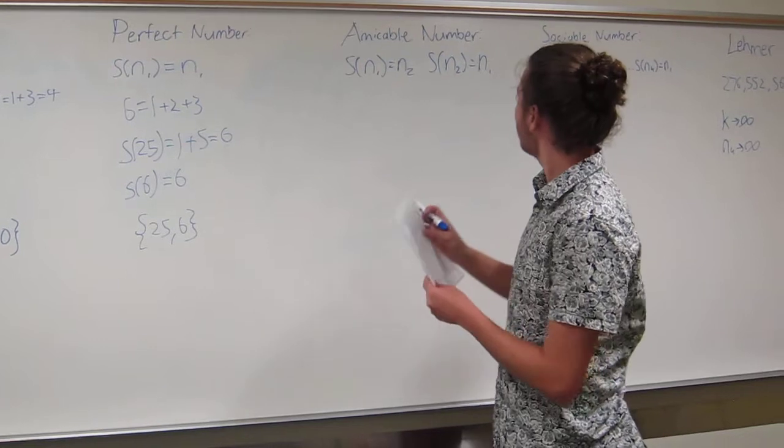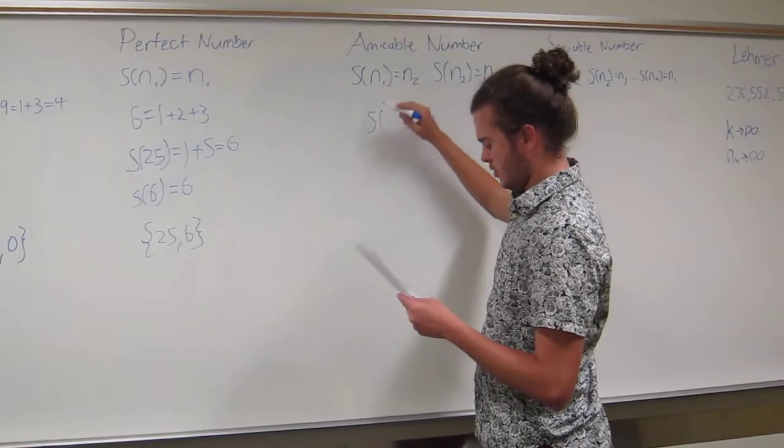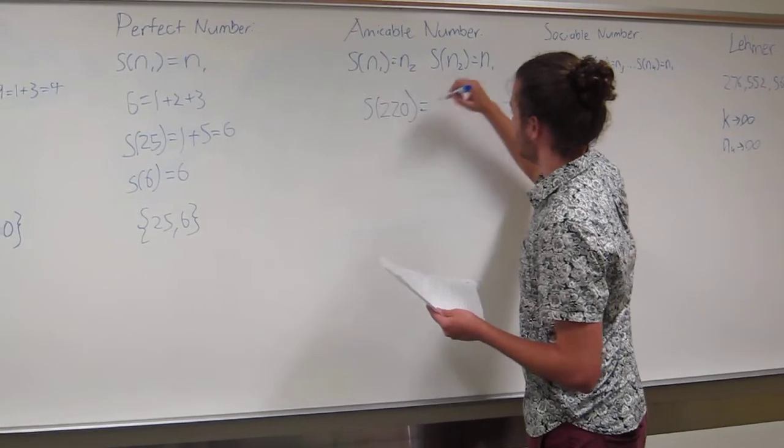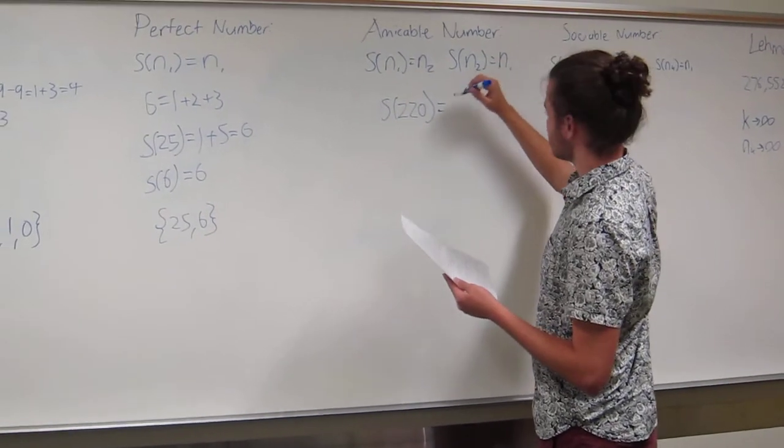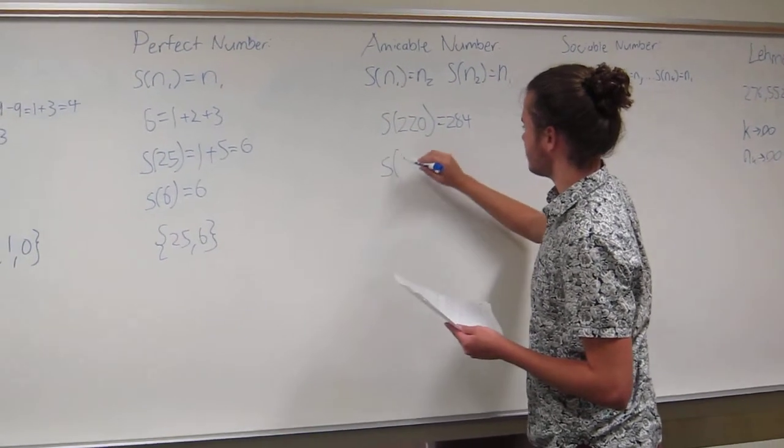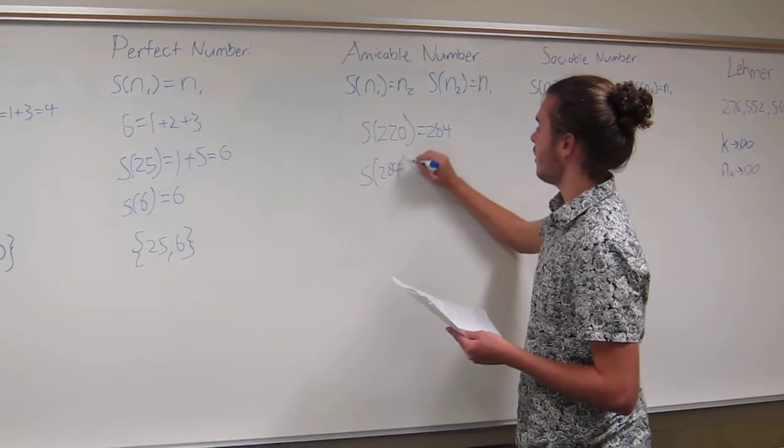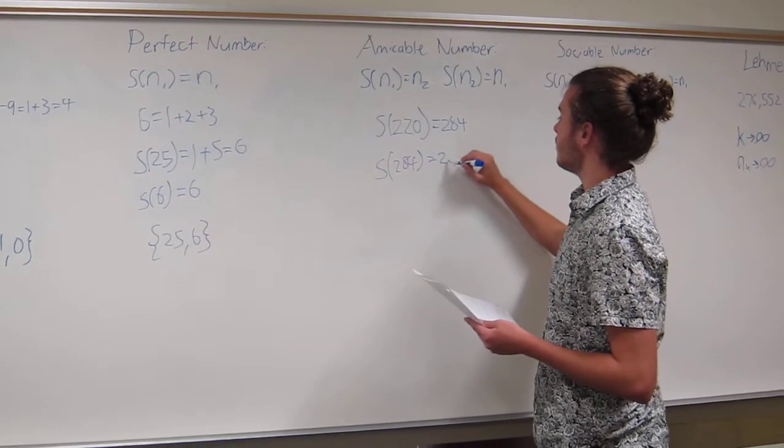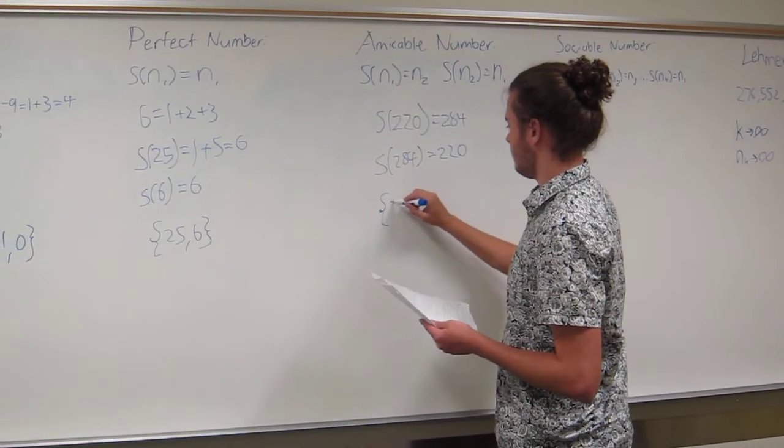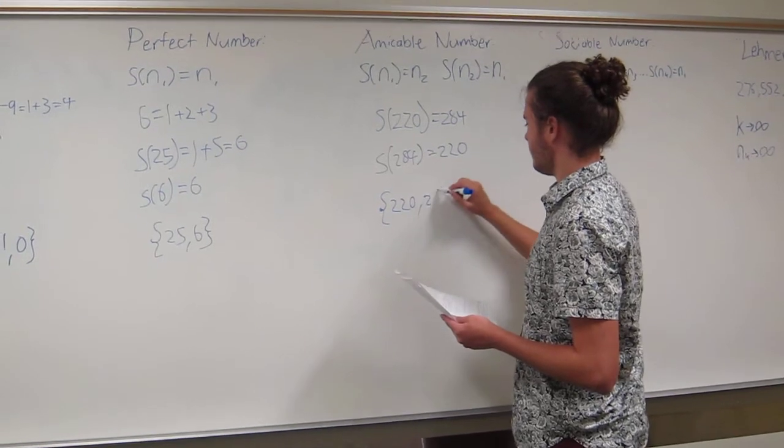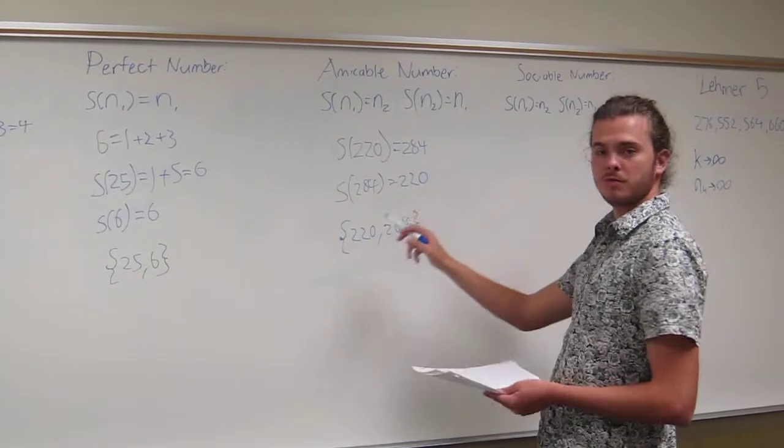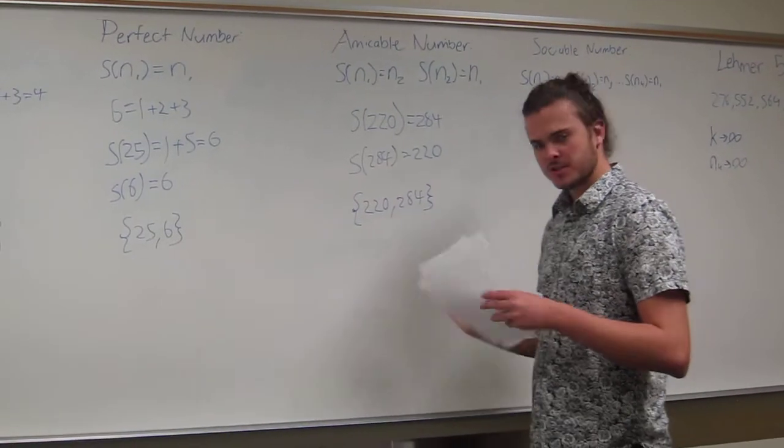I believe the smallest amicable number is 220, and I'm not going to write out all the divisors because that would take a long time. So you're just going to have to trust me that this is equivalent to 284. And then the sum of the proper divisors of 284 is equal to 220. Pretty cool. So this would be 220 and 284 because this repeats itself, so you know that the aliquot sequence ends there.